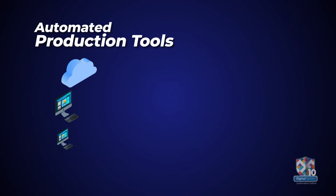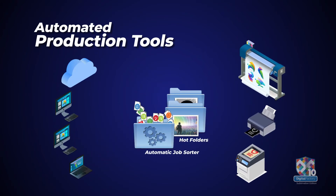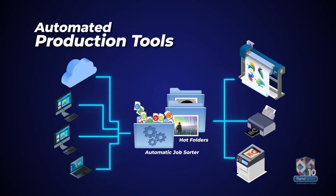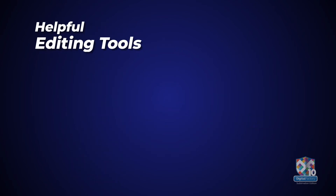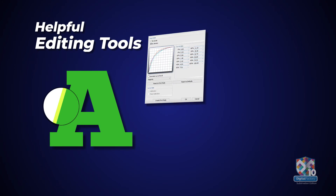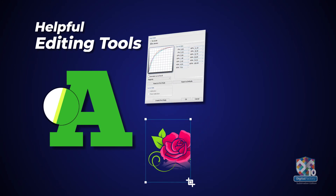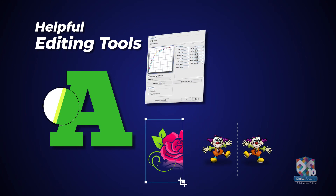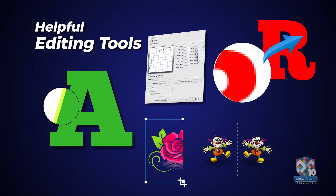Speed up production using barcode, network, and hot folder job processing options. Use helpful editing tools such as chokes and spreads, easy color adjustments, crop, mirror, supersize image, and much more.